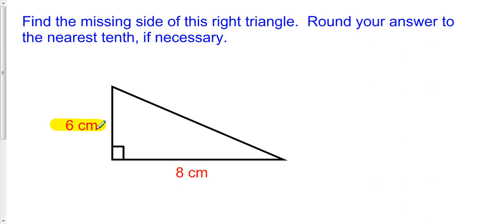So here I have 6 centimeters, here I have 8 centimeters. These are the legs of the triangle. The hypotenuse is what is missing, and we can identify the hypotenuse because it is always opposite the right angle. So here we have the hypotenuse.